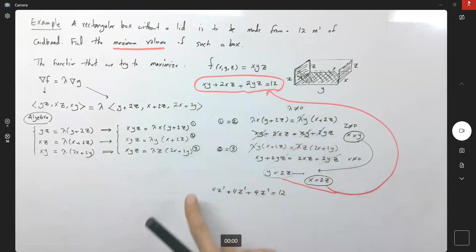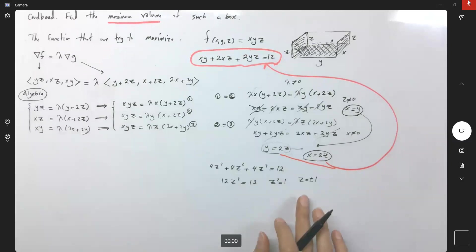Well guys, this equation became an equation in one variable, which is solvable. Here you have 12 z squared equals to 12, or z squared equals to one, or z is plus minus one. All right. Very good. Excellent. I found two values for my z.